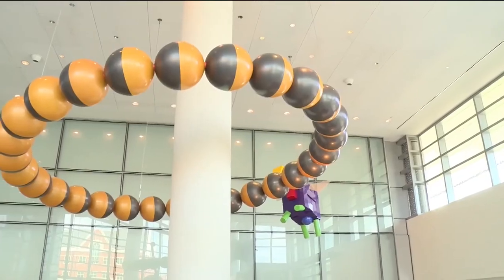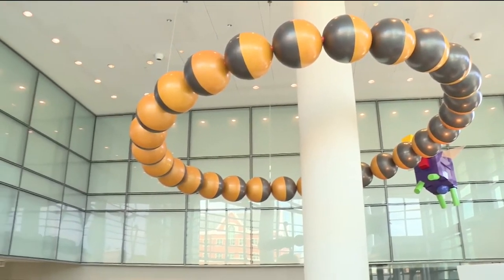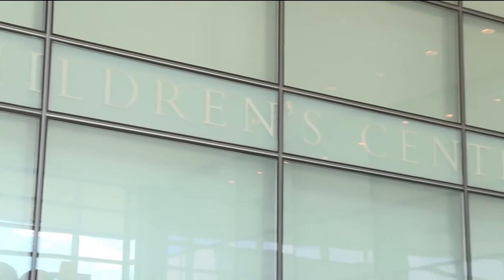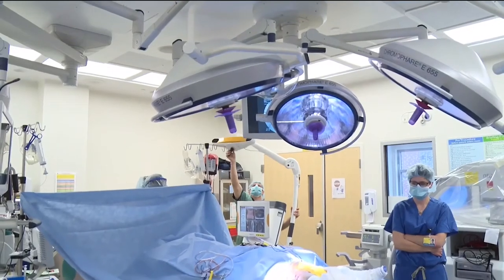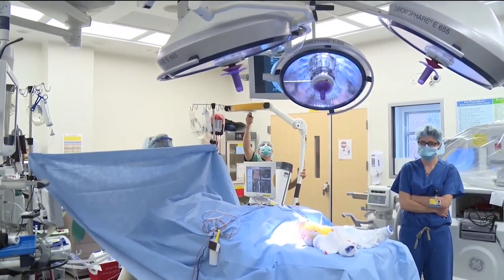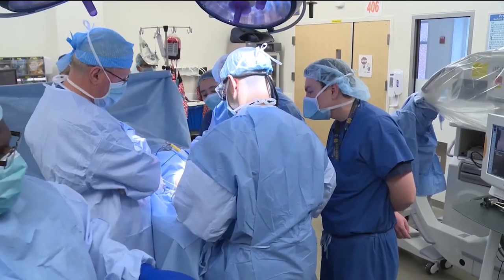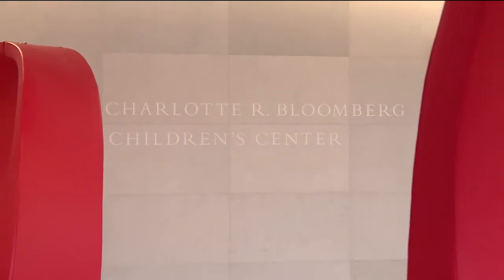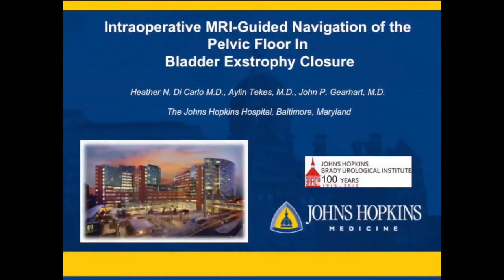Radical dissection of the urogenital diaphragm fibers and the thickened smooth and striated muscle fibers connecting the posterior urethra and bladder plate to the diastatic pubic rami is crucial for adequate bladder extrophy and cloacal extrophy closure, as well as ensuring successful outcomes.